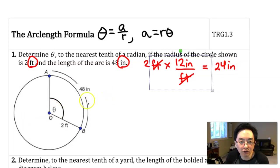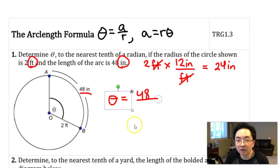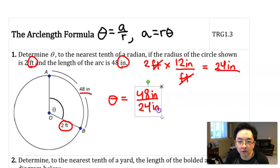Now I'm looking for theta. The formula is theta equals a over r. So I've got theta equals a, which is 48 inches, as indicated right here. And the radius is 24 inches. So now what we end up with is inches cancel and theta is simply equal to 2.